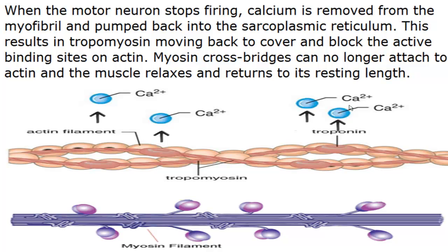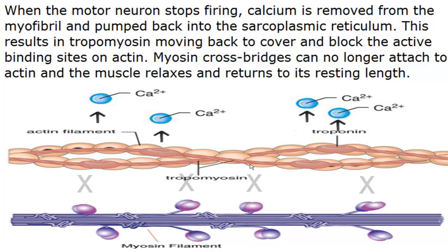Since calcium is no longer binding to troponin, it cannot create the shift in the tropomyosin molecule and expose the active binding sites on the actin molecule. Since the active binding sites are not exposed, the myosin cross bridges cannot attach to the actin molecule, and the muscle relaxes and returns to its resting length.